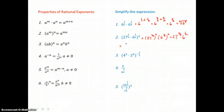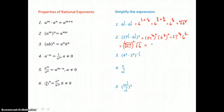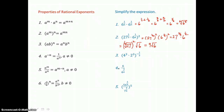Well, 27 to the 2 thirds power is the cube root of 27 squared. And 6 to the 1 half power is just the square root of 1 factor of 6. Simplifying, I can take the cube root of 27 — that's 3 — and 3 squared is 9. So I get 9 square roots of 6. The square root of 6 doesn't simplify further.